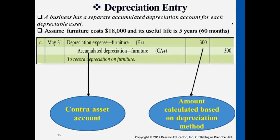We're just capturing May. So assuming that this furniture has a lifetime of five years, then every single month, if the company issues monthly statements, we'll be doing this exact same entry all over again. So we will spread out the cost of $18,000 divided by 60, and every single month reduce the asset's value by $300.